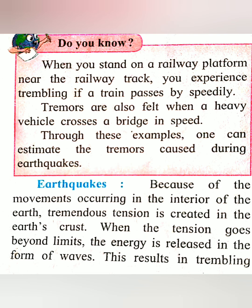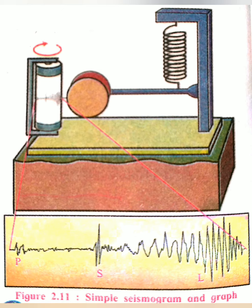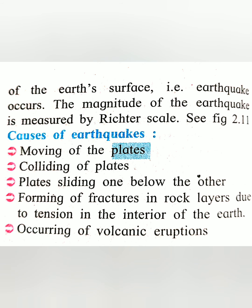Because of movements occurring in the interior of the earth, tremendous tension is created in the earth's crust. When the tension goes beyond limits, energy is released in the form of waves, resulting in trembling of the earth's surface. This is considered an earthquake. The magnitude of the earthquake is measured by the Richter scale — figure 2.11 shows the Richter scale.